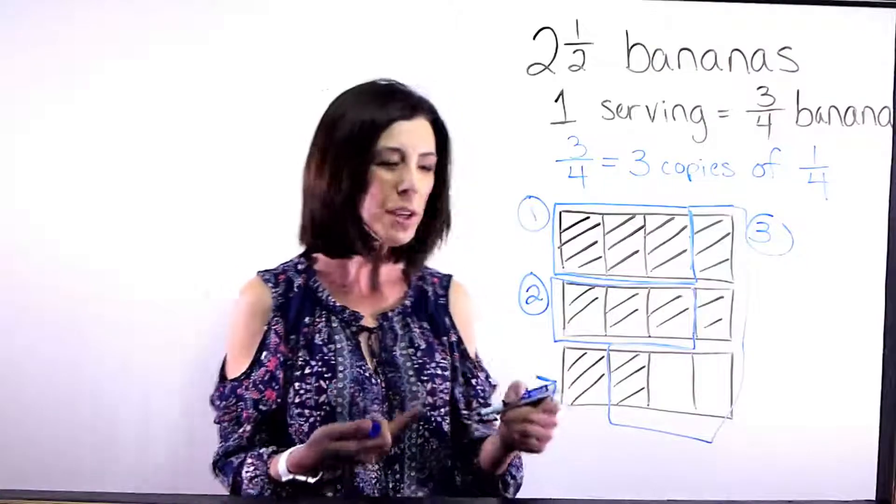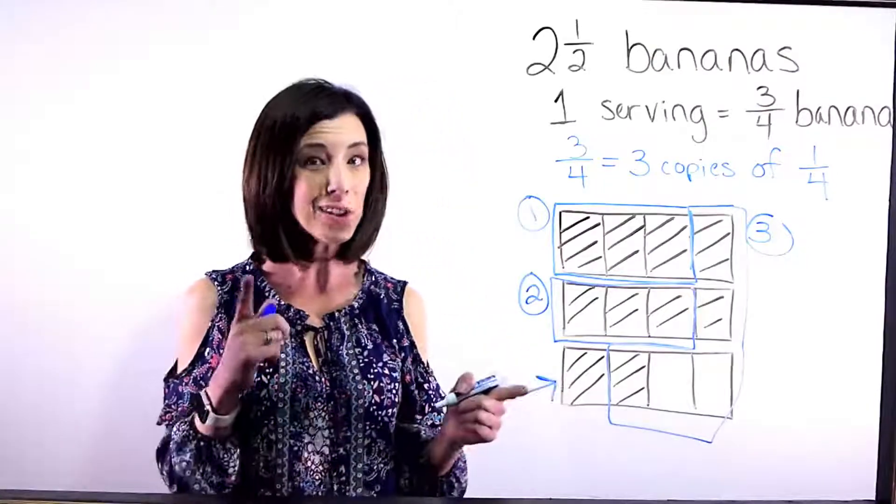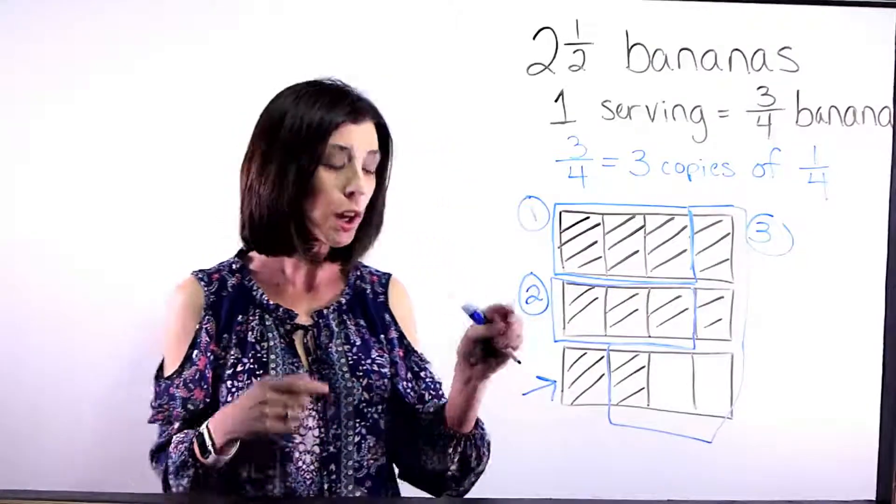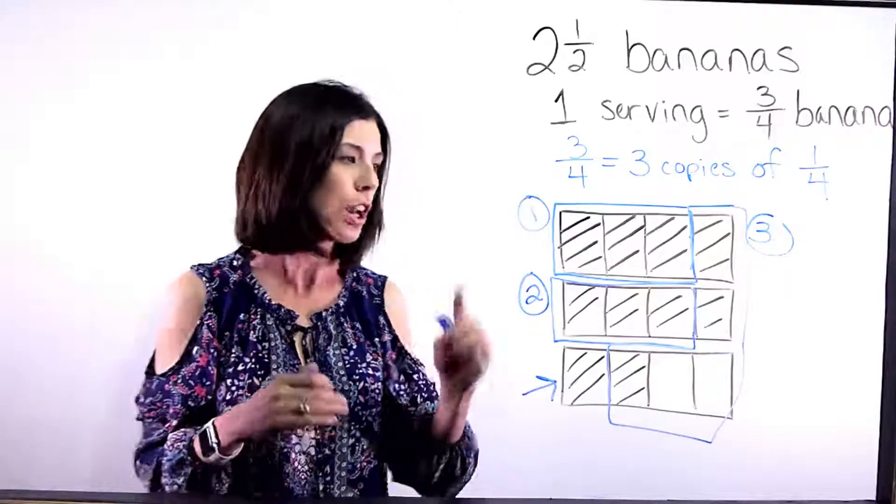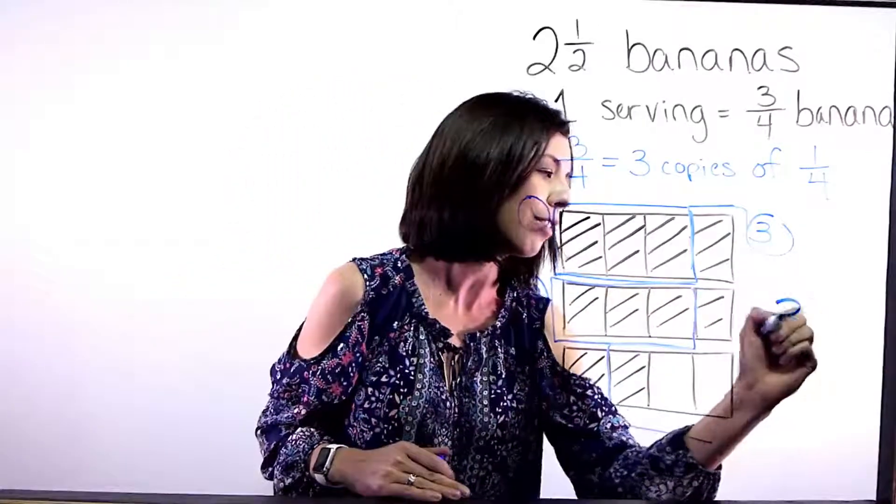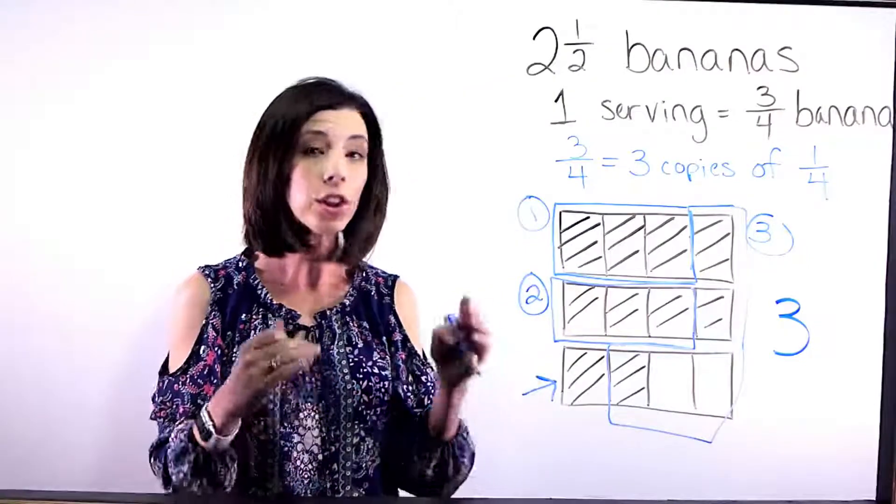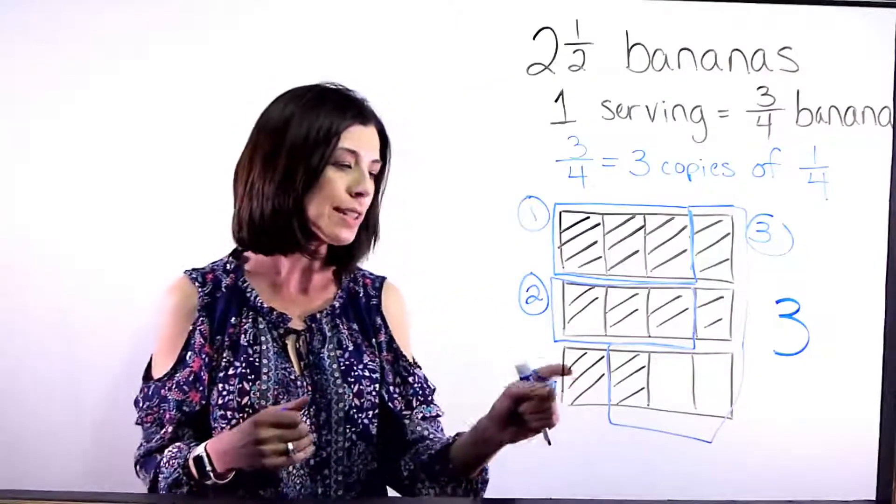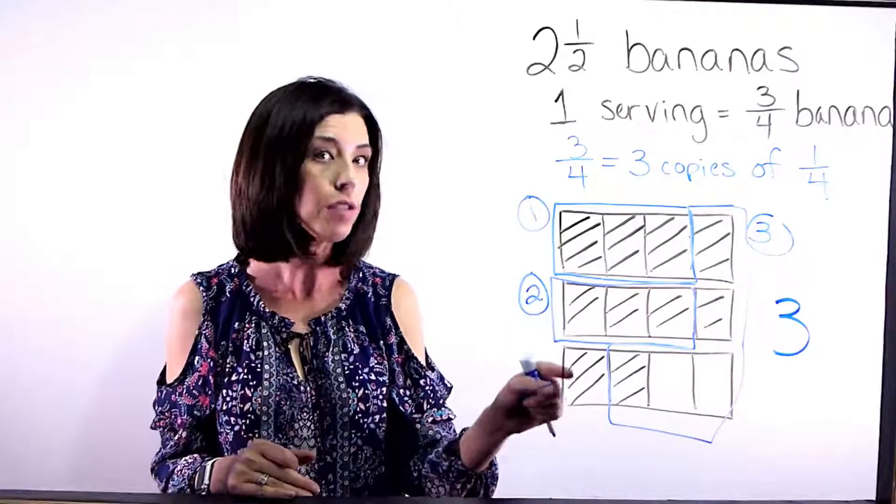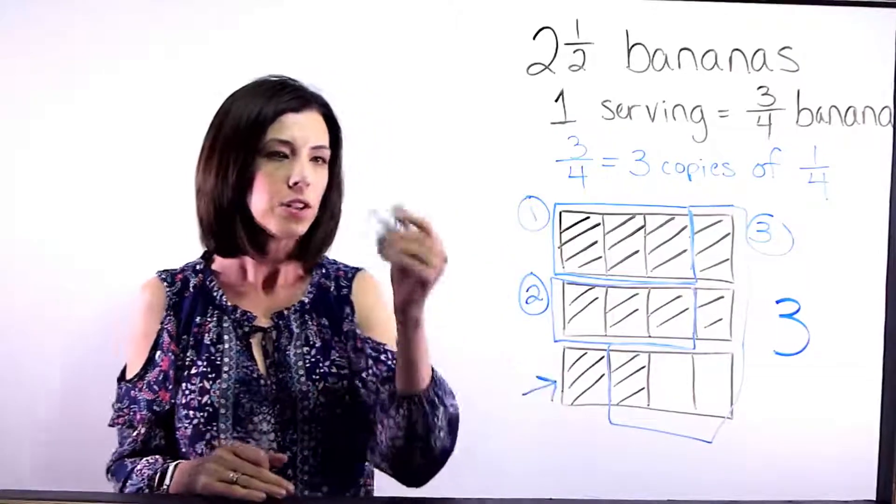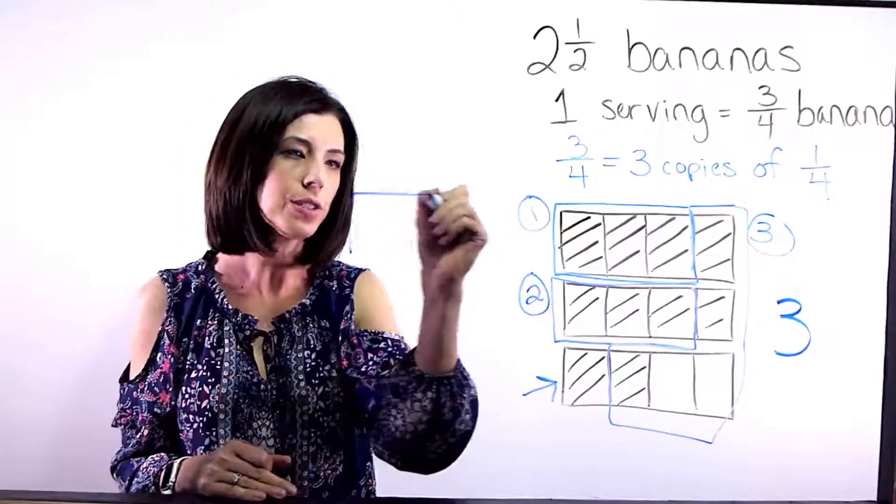Hmm. But what do I do with this piece right here? Here's where it gets a little bit tricky. Our unit has now changed. Well, first of all, let's go back. I know that I have three full servings, but since I have this piece left over and our unit has changed, we're going to see what part of our unit is this piece.